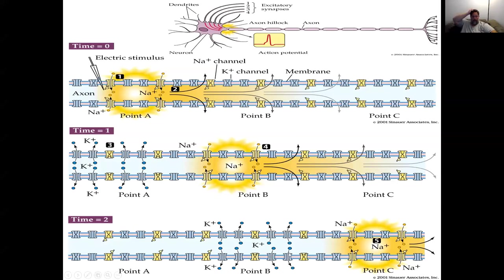This is basically where we left off in the last lecture, where we got into how an action potential worked. Now we're going to start focusing on some other aspects of the action potential. I'll start with a reminder of how it works, then get into saltatory conduction — which means jumping — and how the myelin sheath helps speed up an action potential down the axon. We'll also get into more details about what's happening at the synapse and the release of acetylcholine.